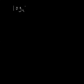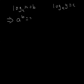Suppose we know that log to the base a of x equals b, and log to the base a of y equals c. That means that a to the power of b equals x — remember, a is the base. And that also means that a to the power of c equals y.